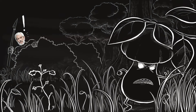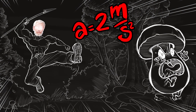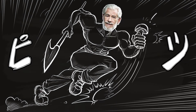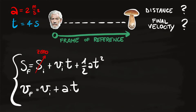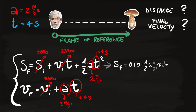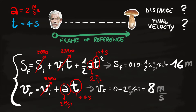Example: grandpa is hunting mushrooms in the woods when he spots a porcino in the distance. He sprints with an acceleration of 2 m/s² and catches it in 4 seconds. Setting the frame of reference with grandpa starting at position zero, si = 0, vi = 0, a = 2 m/s², t = 4 s: the position equation gives sf = 16 meters. For velocity: vi = 0, a = 2, t = 4, so grandpa catches the mushroom at 8 m/s. Tonight: polenta with mushrooms.